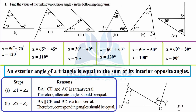The concept says an exterior angle of a triangle is equal to the sum of its interior opposite angles. Here we have different terms. First is the exterior angle of a triangle. If you see this figure, we have triangle ABC. An exterior angle will not be inside the triangle, because inside are only these interior points.